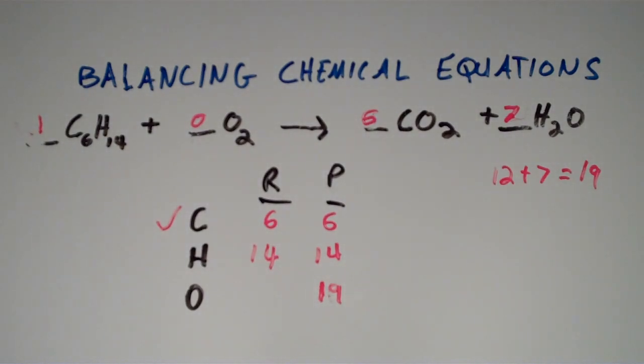Now, if we use nine, if we use the coefficient of nine, we'll end up getting 18 oxygens, and we'll be one short. And then if we use 10, we'll end up getting 20 oxygens, and then we'll have one too many.